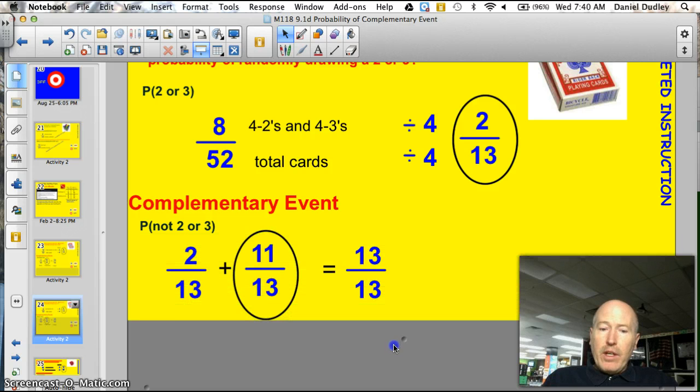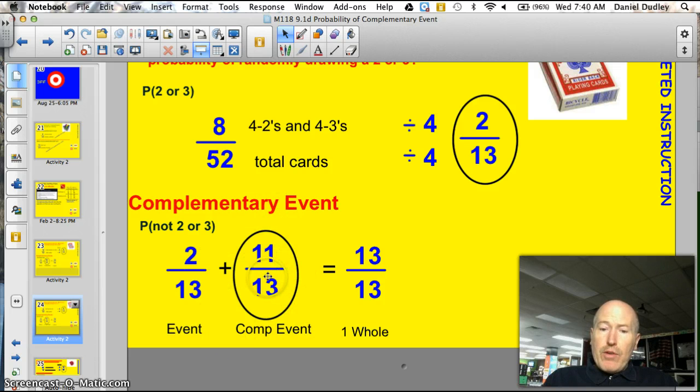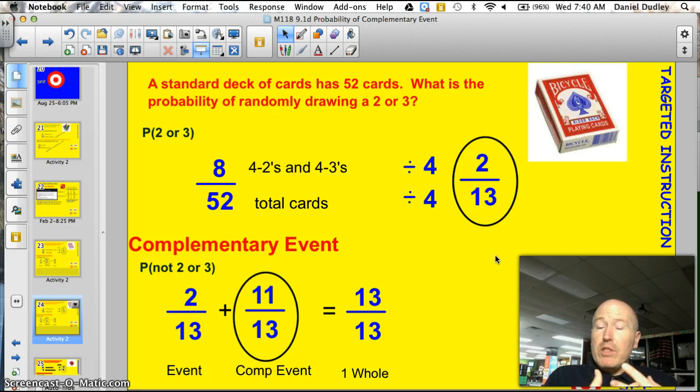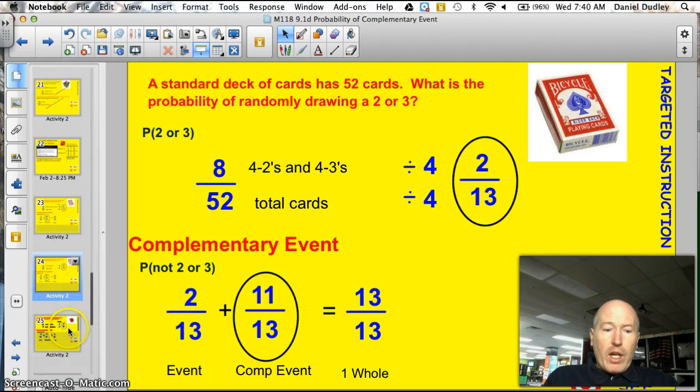Alright, let's take a look-see and see how you did. Well, here's the event, 2/13. The complementary event is going to be 11/13 for a total of 13/13. Didn't quite understand that? We can do it this way, too. We have 8 chances out of 52 of drawing a 2 or a 3, and 52 minus 8 would be 44. So 44 chances out of 52 of drawing something other than a 2 or a 3. Okay? The only difference is, I like to work with the numbers reduced into simplest form. It just makes it easier, especially when figuring out that complementary event.